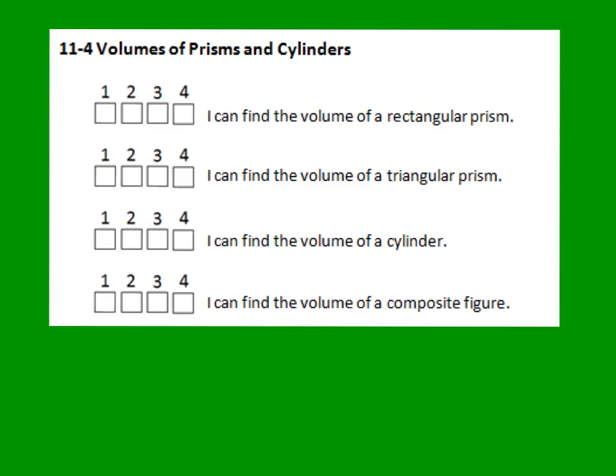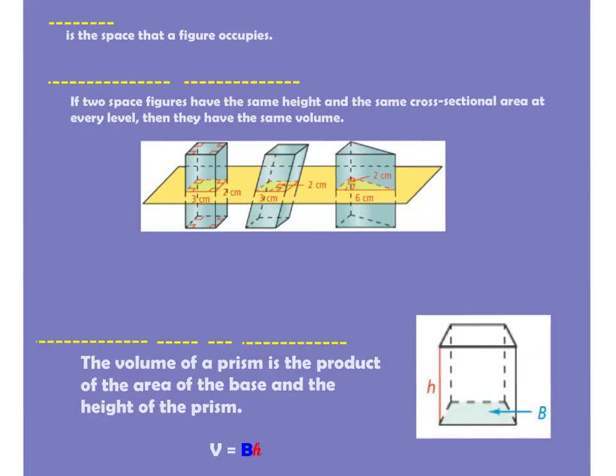Starting section 11.4, focusing on volume. We've spent a lot of time on surface area and lateral area. Now we're looking at the volume of rectangular prisms, triangular prisms, cylinders, and composite figures, which are a combination of different shapes that we can find the volume of. First we have some vocabulary. The volume is the space that a figure occupies.